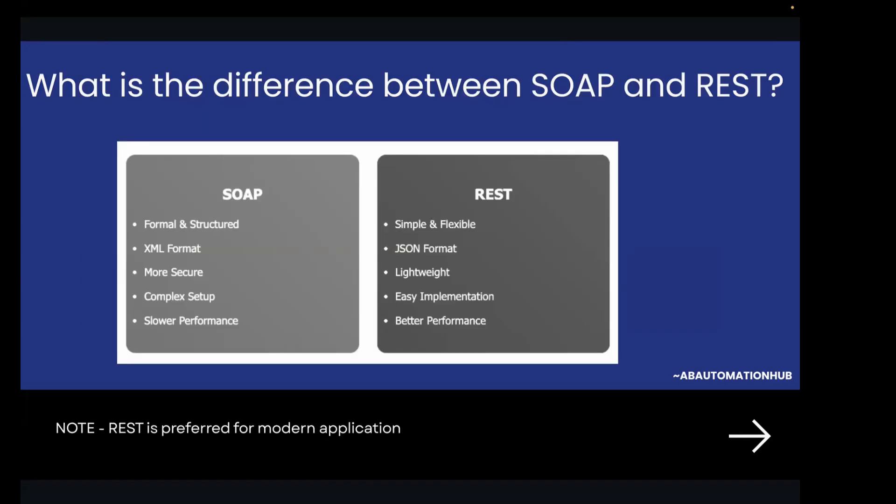Moving on to the next one — think of SOAP and REST as two different ways of ordering food. SOAP is like ordering from a fancy restaurant, whereas REST is like ordering from a food truck. SOAP is very formal and structured with lots of rules and protocols; it uses XML, is more secure, but it is slow. REST, on the other hand, is simple and flexible, easy to understand, uses JSON which is lighter, and is very fast with better performance. Most modern applications today use REST because it is simpler and faster.